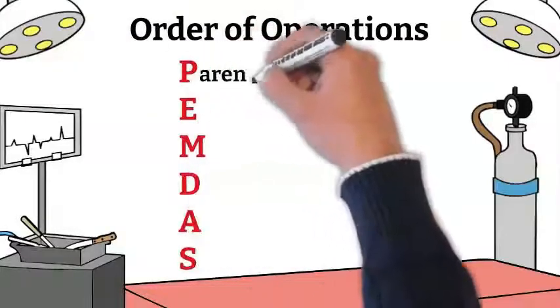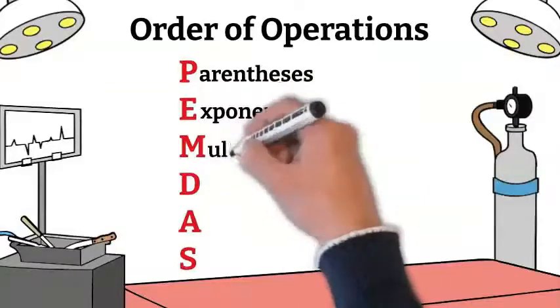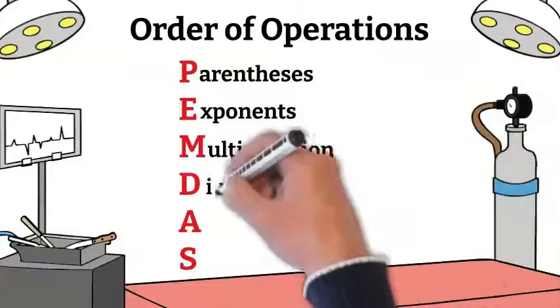First, we do parentheses. Any parentheses in the expression should be done first. Then we move on to exponents. After the exponents are taken care of, you want to take care of all the multiplication and division.